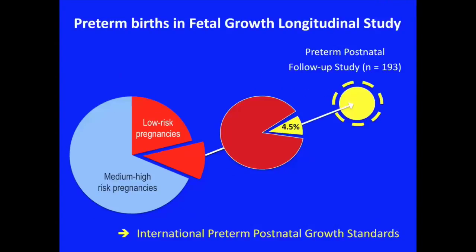Interestingly, within this very healthy cohort of 4,600 mothers, we were always interested in following the growth of babies delivered preterm. Rates of preterm birth around the world generally hover around 10%, and preterm birth is now the number one killer of children under the age of five. We found in these very selected women that their rate of preterm birth fell to 4.5%. There is a lot of interest in this population as to what we could scale up in other settings to lower this rate. We are also producing preterm growth standards from that population.